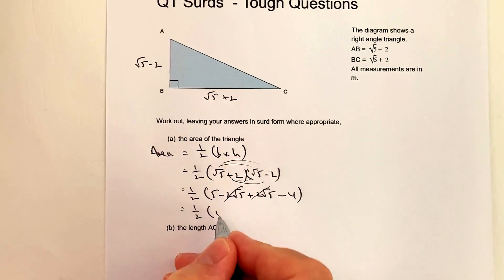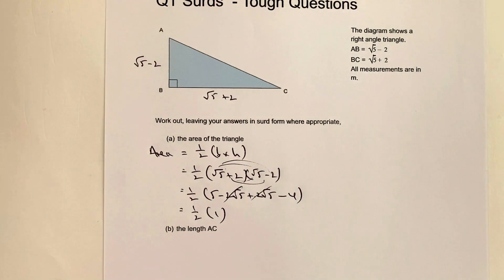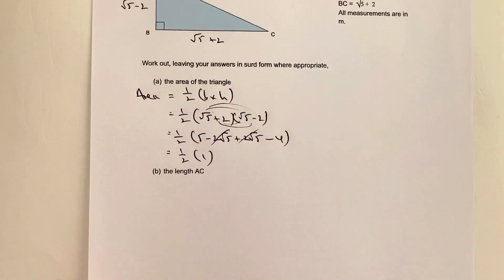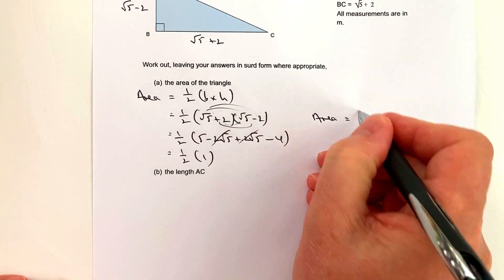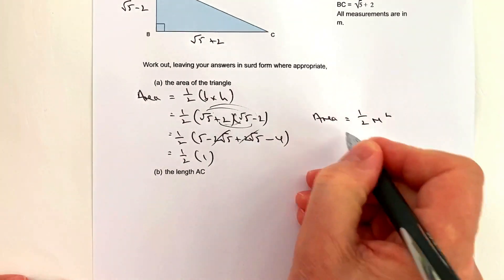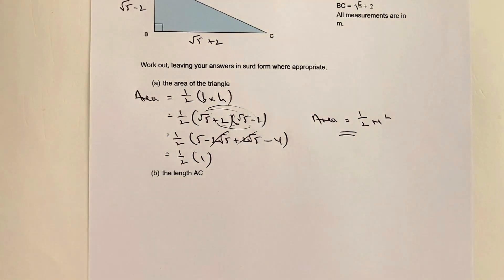So I end up with half of 1. Since all dimensions are in meters, the area equals 1/2 m². That's the answer to part A.